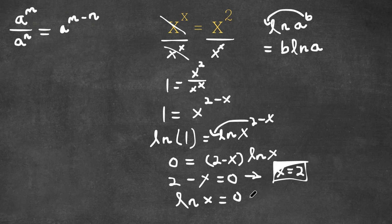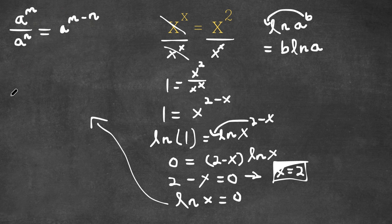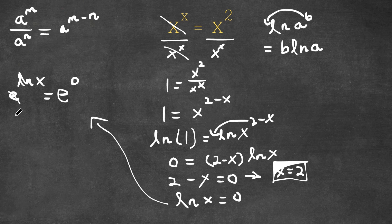And now for ln of x equals 0, we're going to take e to the power of both sides. So we have e to the power of ln x is equal to e to the power of 0. Now e to the power of ln x, these two cancel out. So I simply have x is equal to e to the power of 0, which is 1. So this is our second solution.